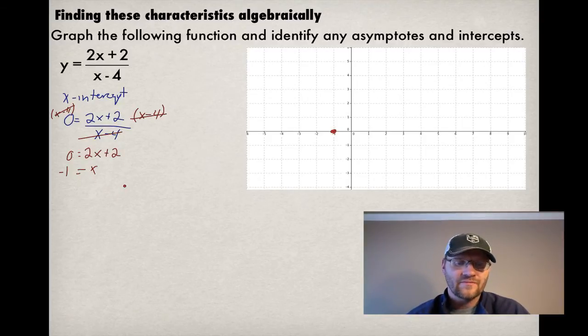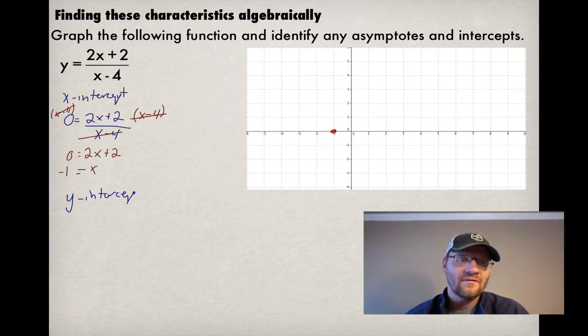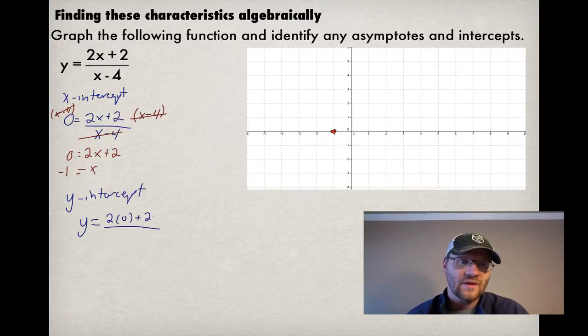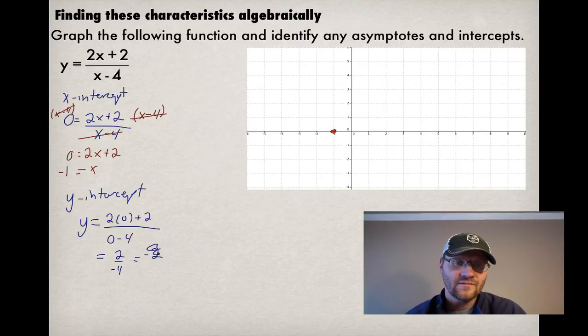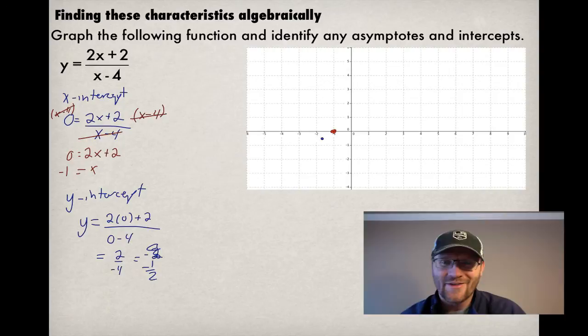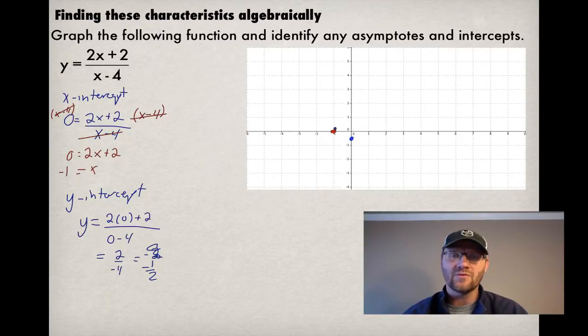Our y-intercept is found by letting x equals 0. So now we have y equals 2 times 0 plus 2, and 0 minus 4. And when we do that, we find that we get 2 over negative 4, which is negative 1 half. So now we have a y-intercept of negative 1 half. So we know that's where our graph is going to go through these two points.